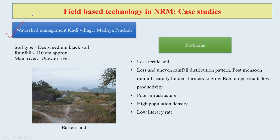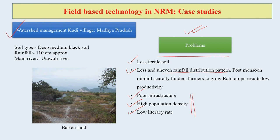For example, the watershed management of Kudi village in Madhya Pradesh. That particular area had some problems and issues before watershed management practices were carried out: less fertile soil, less and uneven rainfall distribution pattern, causing water scarcity and affecting rabi crops. There was also poor infrastructure, high population density, and low literacy rate — a cocktail of problems which can hinder the pace of growth of any area.